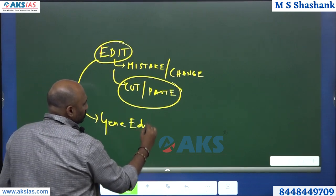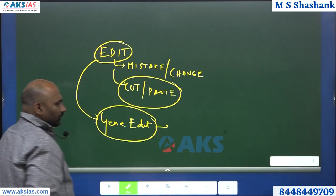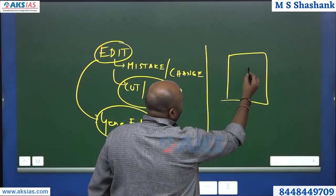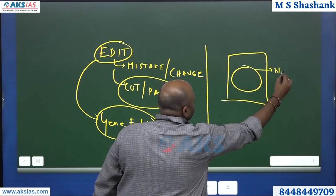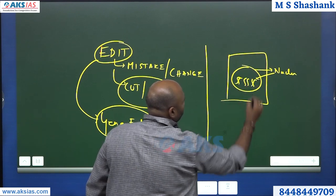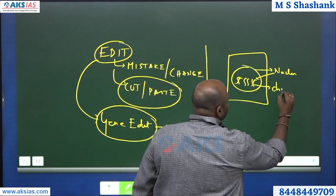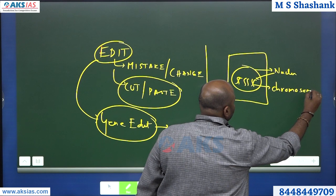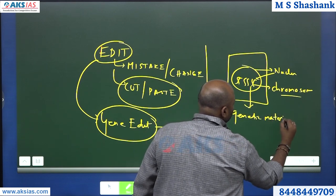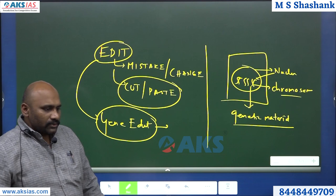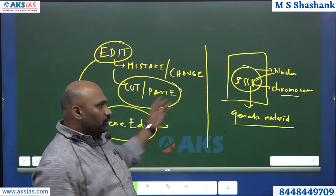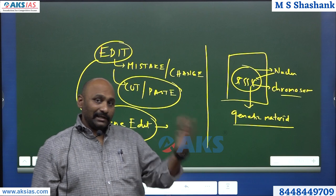The concept is very simple. For example, if this is your cell, inside the cell you have the nucleus, and in the nucleus you will have sets of chromosomes. These chromosomes are the genetic material. So if there is any disease — for example, sickle cell anemia — you can use this gene editing process to fundamentally clear that kind of disease.